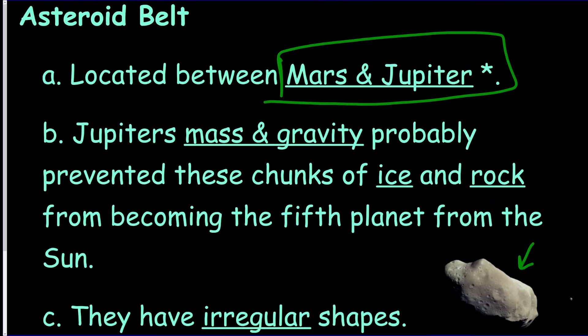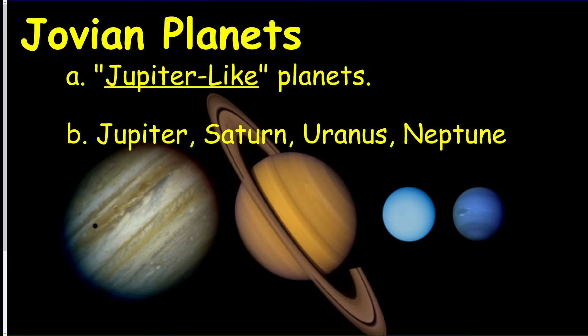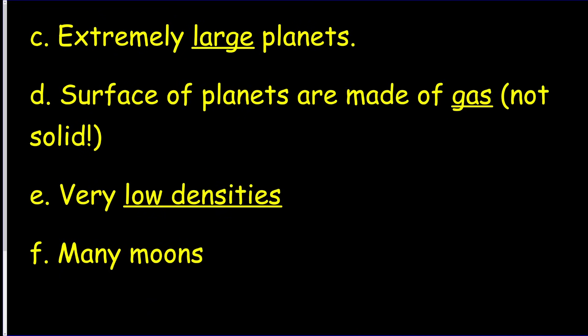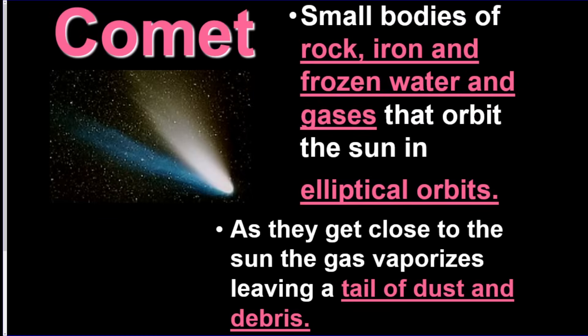We have a Jovian planet slide here: Jupiter, Saturn, Uranus, Neptune. These are our four gas giants. Some facts about them—they're really big, they're made of gas, they have low densities, and they have a lot of moons. There's also a comet. This is a small body of rock, iron, and water that is orbiting the Sun. And as it gets close to the Sun, it produces this tail, and the tail always points away from the Sun.